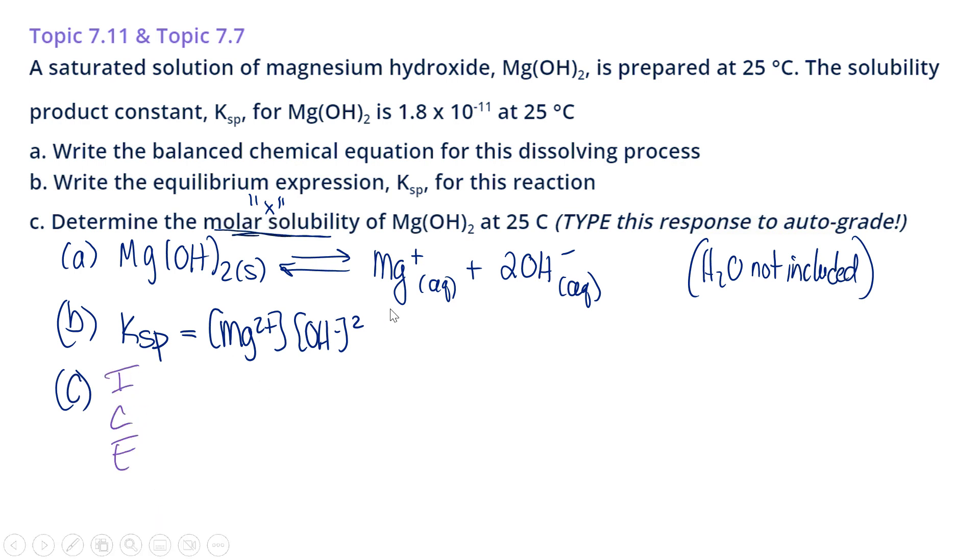In my ICE chart, I'm going to draw a squiggly line through my reactant because it's a solid. So it's not part of my K calculation. And we are dissolving this.